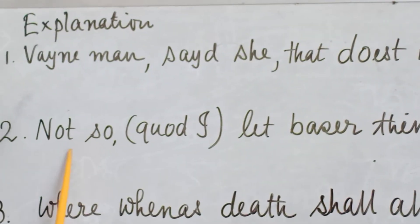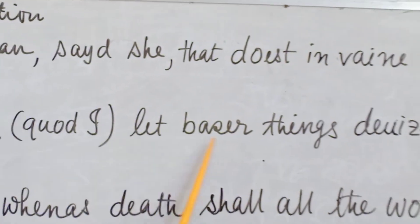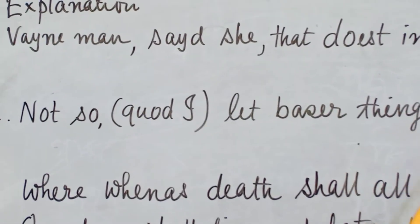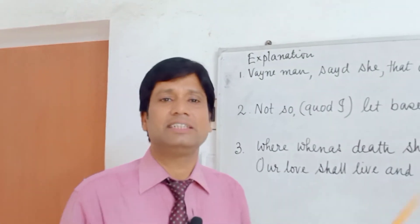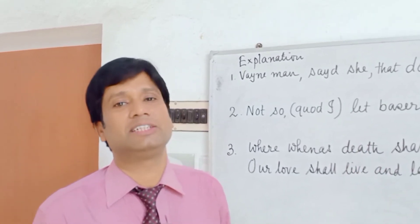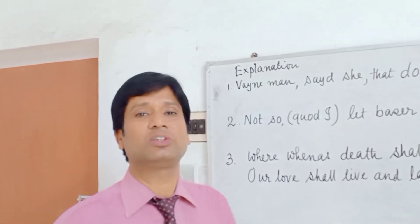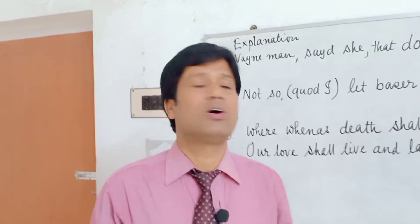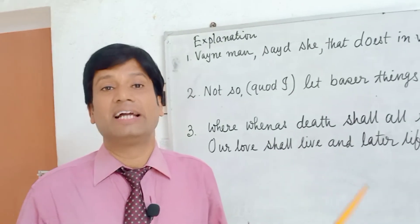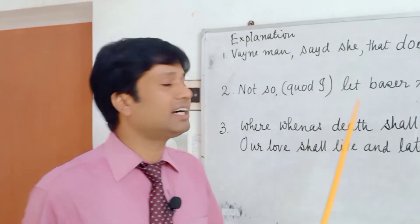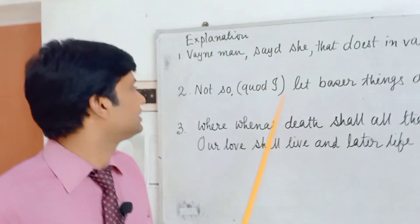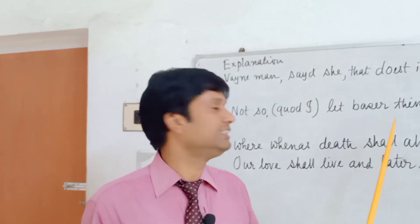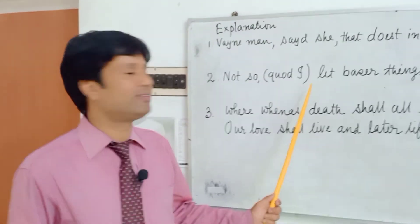The second explanation: 'Not so could I let lesser things divide.' The poet-lover says that their love is not a matter of inferior quality — their love is of divine quality. So this is not a base thing; it is like gold that will glitter forever, and in such a way it will be immortalized. It will not decay or die. Their love and their virtues are of divine qualities.